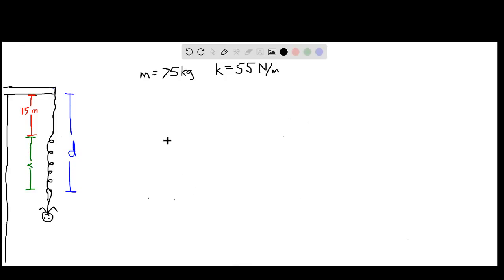In this problem, we want to find the distance d that a man falls from a bridge before his bungee cord brings him to rest and recoils. He falls 15 meters before the cord, regarded as a spring, stretches by an amount x.